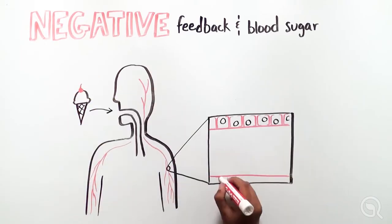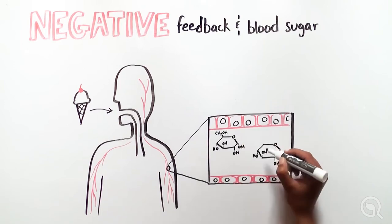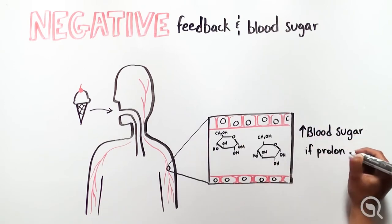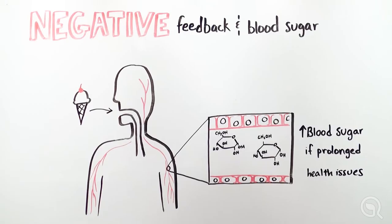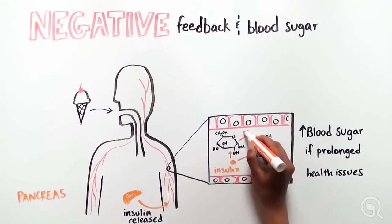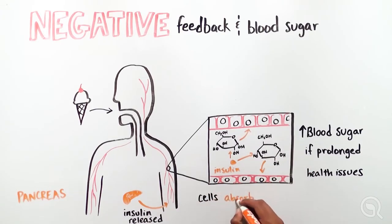our blood sugar levels rise, but prolonged high blood sugar levels can lead to serious health problems. A molecule called insulin is released in response to increased blood sugar, which helps sugar molecules enter cells to be used for energy, and simultaneously lowers levels in the blood back to the set point.